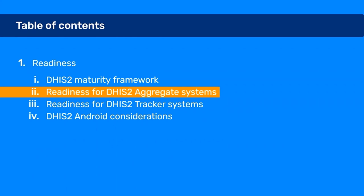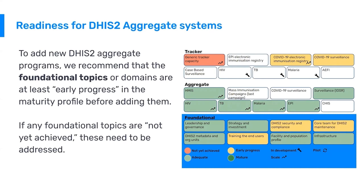To add new DHIS2 aggregate programs — for example, if a country wants to add aggregate EPI, HIV, or surveillance — we recommend that all the foundational topics shown in the blue square are at least in early progress, meaning the yellow marking in the maturity profile, before starting a new program. If a country is scoring red — not yet achieved — these really need to be addressed. You can start a new aggregate program, but we highly recommend addressing those gaps, because if there is no system for training end users, no facility or population profile, or the infrastructure situation is very poor, it's very hard to do even aggregate programs well.